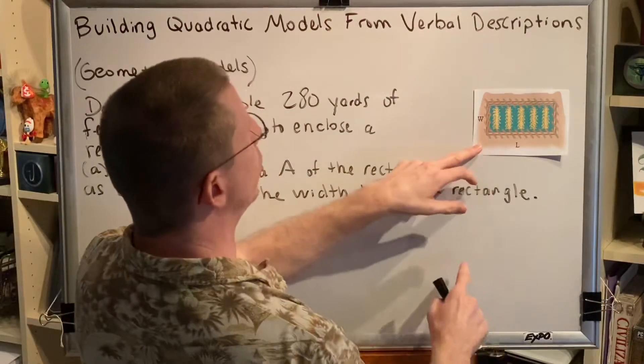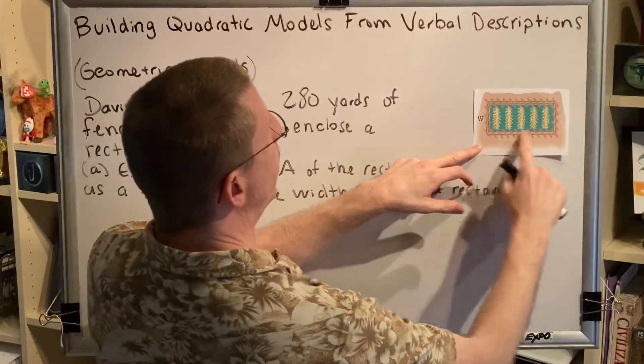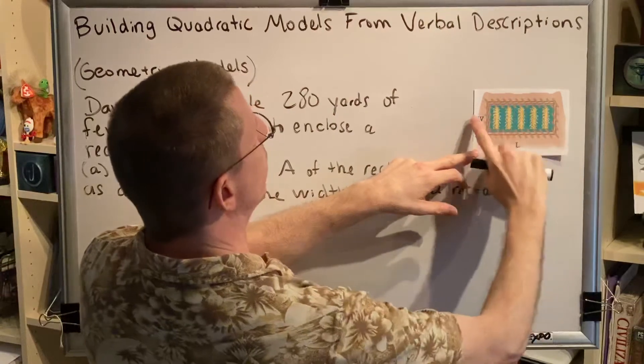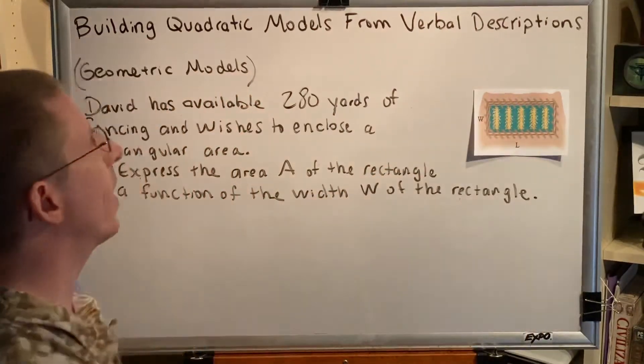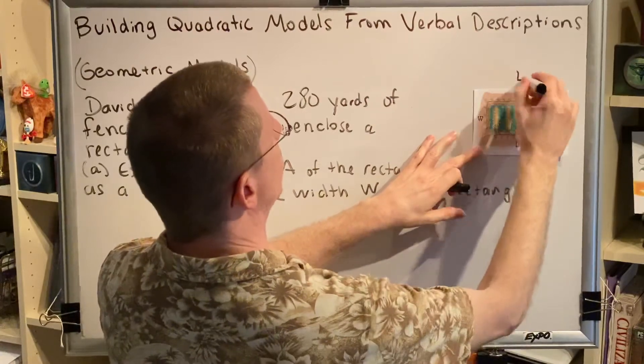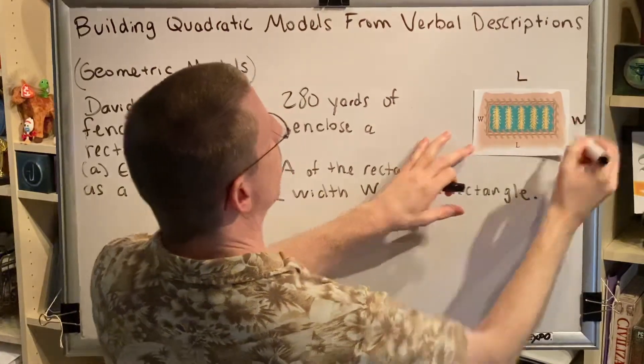The perimeter is labeled in two different ways. This distance here is the length and this distance here is the width. Now the thing that makes a rectangle a rectangle is that opposing sides have the same distance. So that means that this must also be L, and this must also be W.